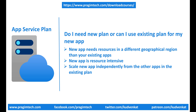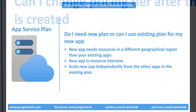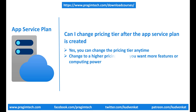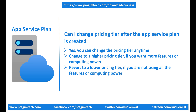As we've discussed, when we create a new App Service Plan, one of the important decisions is selecting the appropriate pricing tier. Let's say accidentally I've selected a higher pricing tier — this obviously means it's costing me more. Can I change the pricing tier after the App Service Plan is created? The answer is yes, you can change the pricing tier anytime you want. If you want more features or computing power, change to a higher tier. If you discover you're not using all features, you can revert to a lower pricing tier. You can scale your App Service Plan up or down anytime simply by changing the pricing tier.